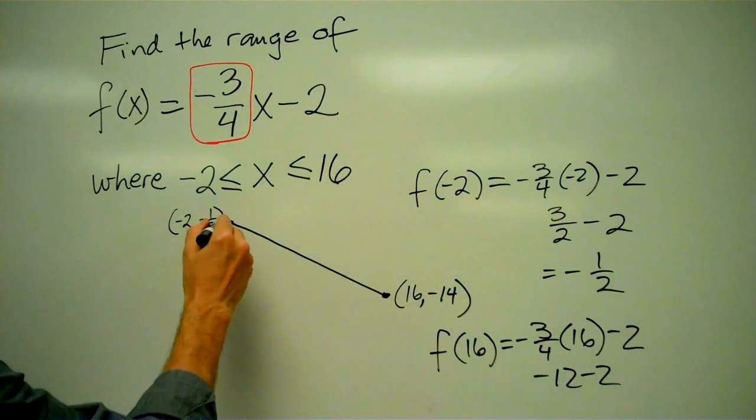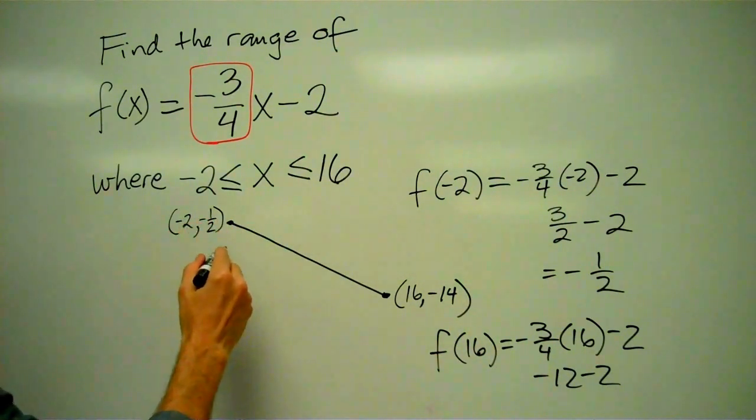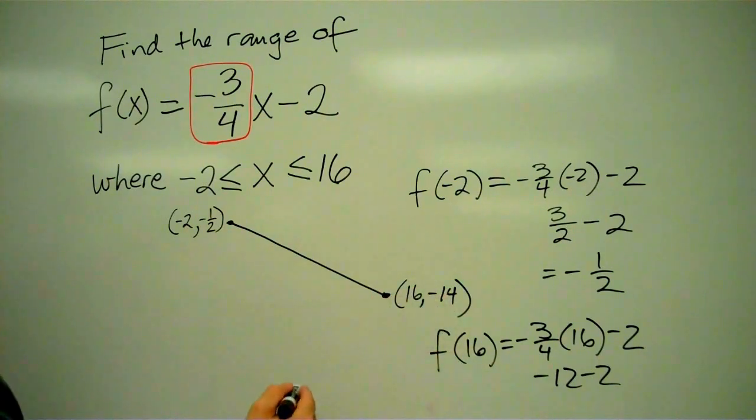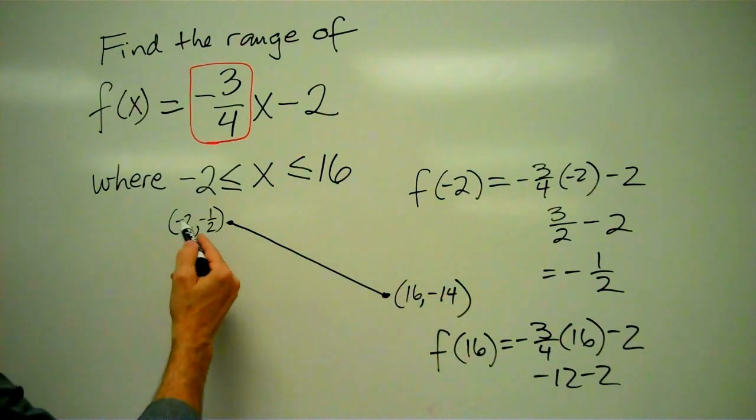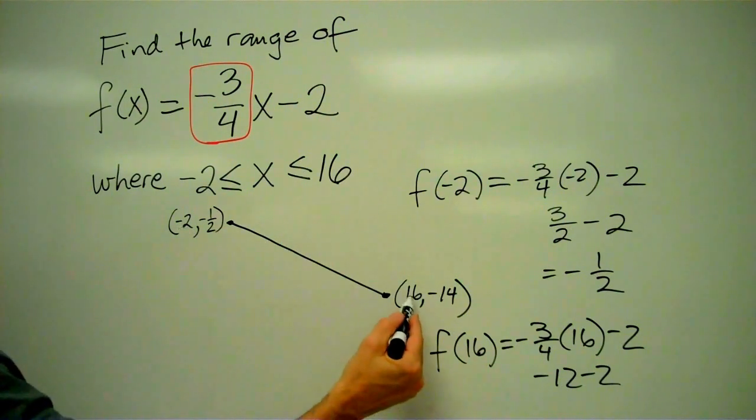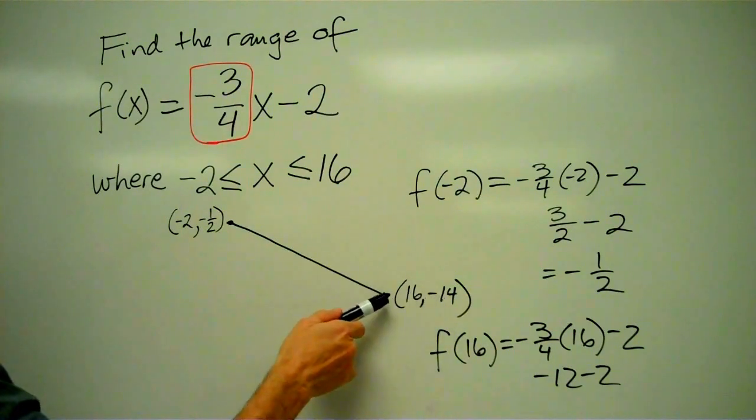So now we see that this is a segment that goes from the point negative 2, negative 1 half, to 16, negative 14. Our domain goes from this x-coordinate, negative 2, to this x-coordinate, 16. And our range goes from negative 14, that's the low point, up to negative 1 half.